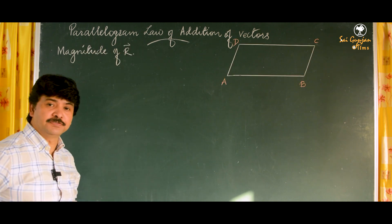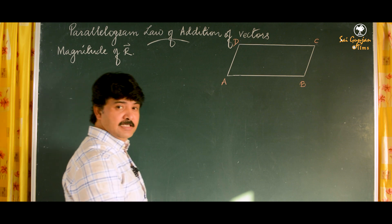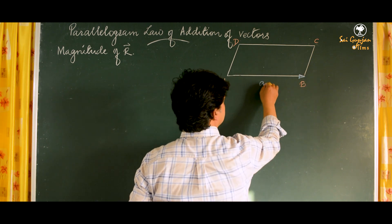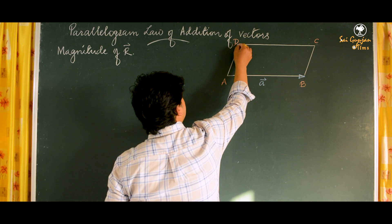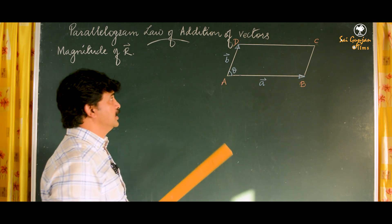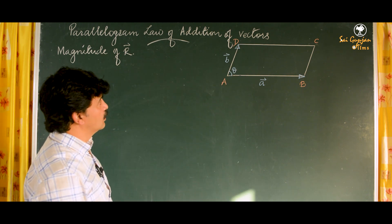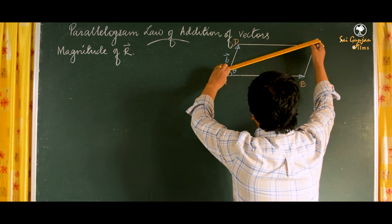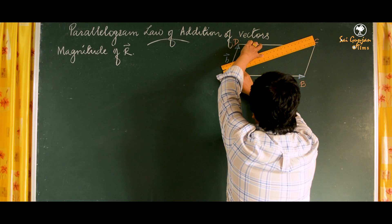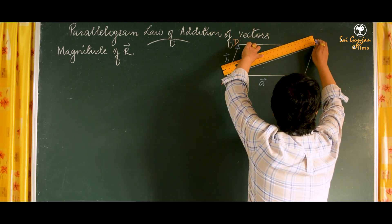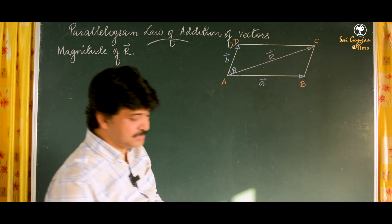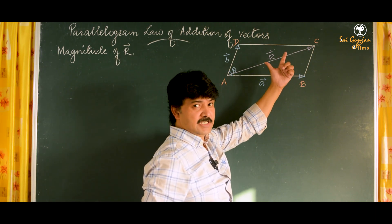To get the magnitude of resultant R, consider a parallelogram where side AB represents vector a and side AD represents vector b, with angle theta between them. According to the parallelogram law, the diagonal AC represents the resultant vector in magnitude and direction. We need to find the value of this resultant vector.